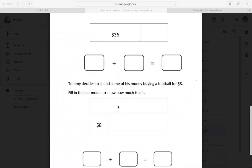What was his total? He spent eight. How much does he have left? So eight plus something is going to equal his total.